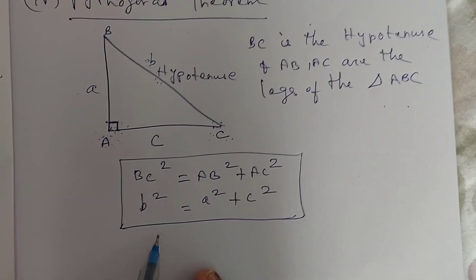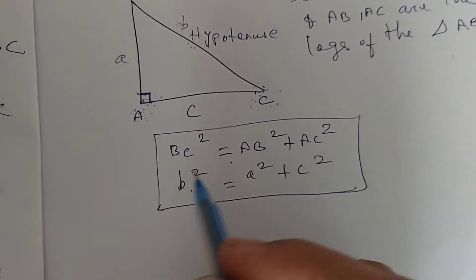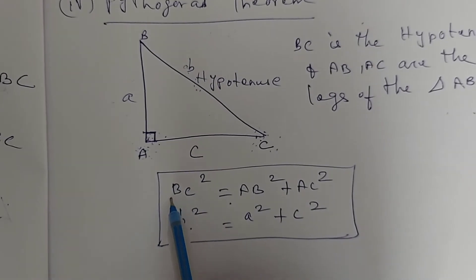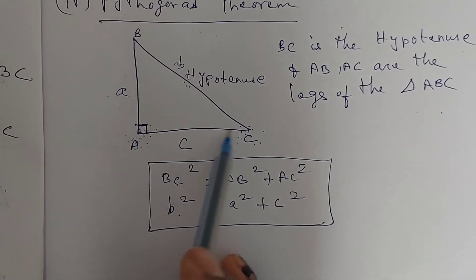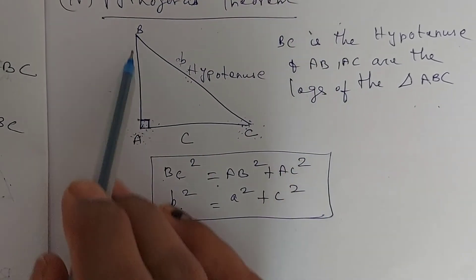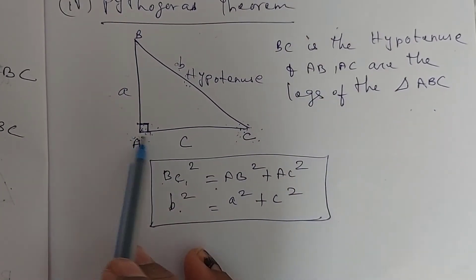Have you understood children? B squared, that is BC squared is equal to A, that is the square of the hypotenuse is equal to sum of the squares of the sides. That is BC squared is equal to AB squared plus AC squared.